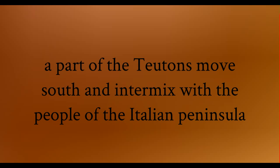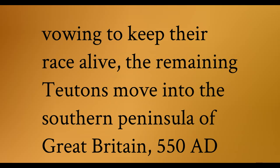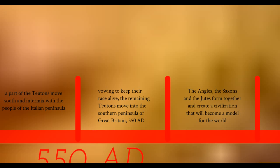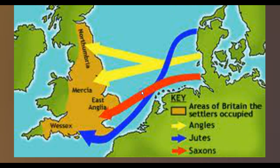As fate would have it, part of the Teutons got antsy, broke away, moved south, and intermixed with the people of the Italian Peninsula. Following their belief of superiority and vowing to keep their pure race alive, they shunned those who broke with tradition and moved yet again into Great Britain. This is where we see the beginnings around 550 AD — Jutes, Angles, and Saxons intermixing, forming the Anglo-Saxon race.